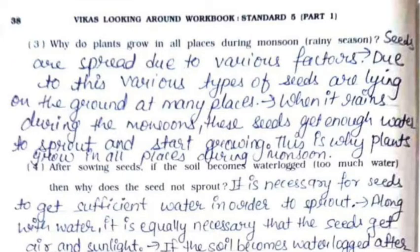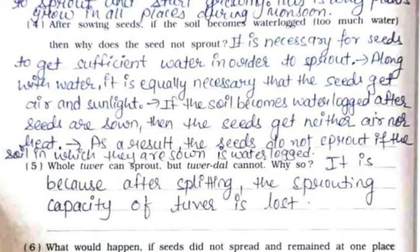Third: why do plants grow in all places during monsoon? Seeds are spread due to various factors, so various types of seeds are lying on the ground at many places. When it rains during the monsoon, these seeds get enough water to sprout and start growing. Fourth: if soil becomes waterlogged, why does the seed not sprout? Seeds need sufficient water, air, and sunlight. If soil is waterlogged, seeds get neither air nor heat, so they do not sprout.